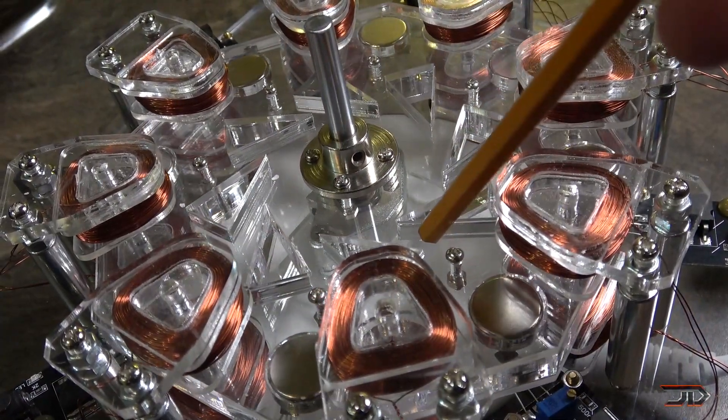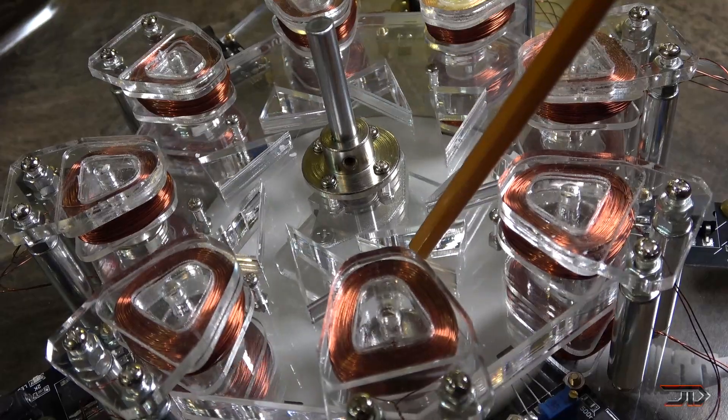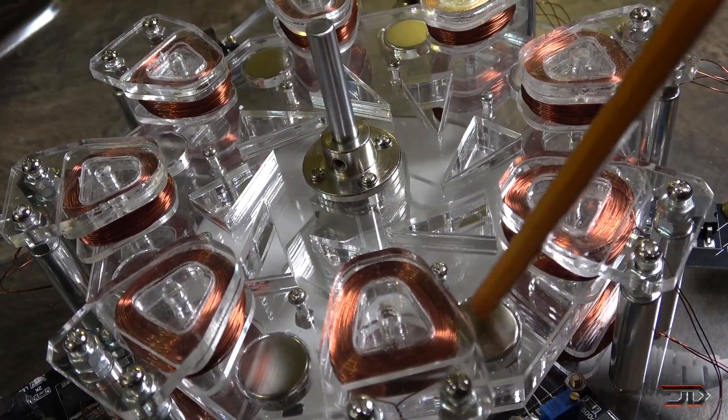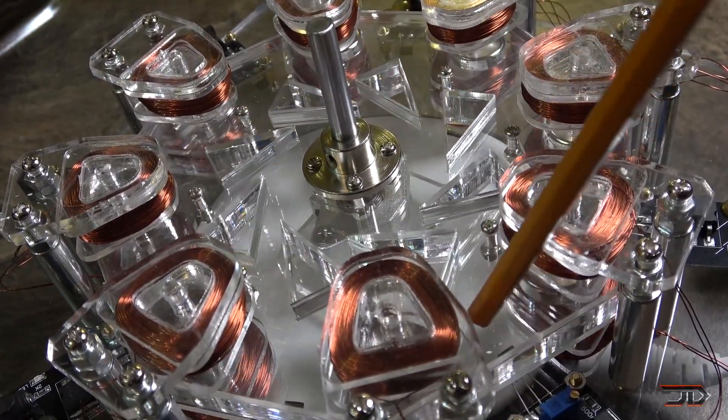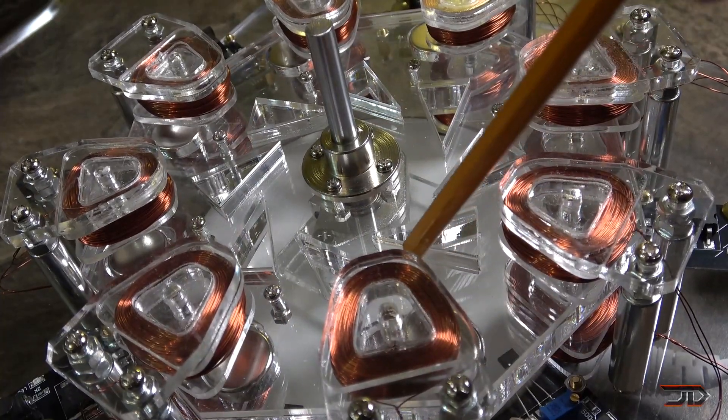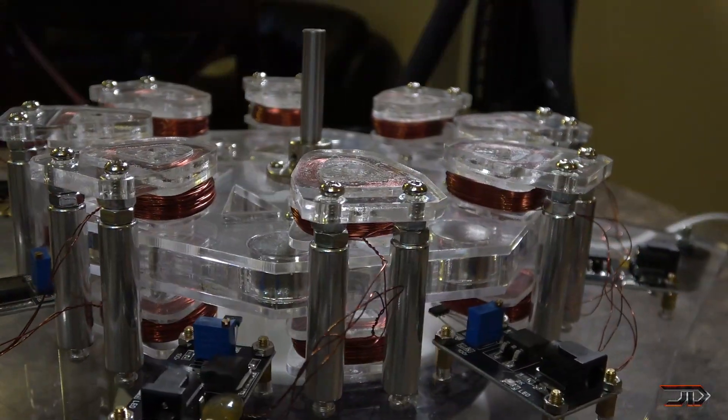Now, similar to the cyclotron kit, this one utilizes coils to propel magnets in one direction around the circumference of the rotor. And there are two coils, and they basically sandwich these magnets.